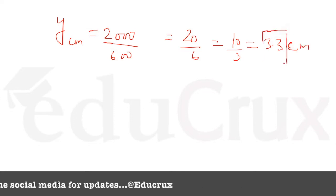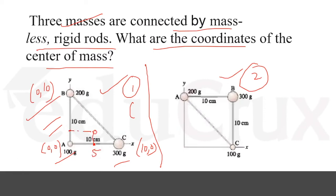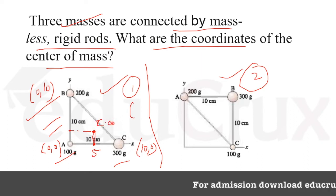So for the first figure, the center of mass coordinates are X_cm = 5 cm and Y_cm ≈ 3.3 cm. That is our center of mass for figure one.